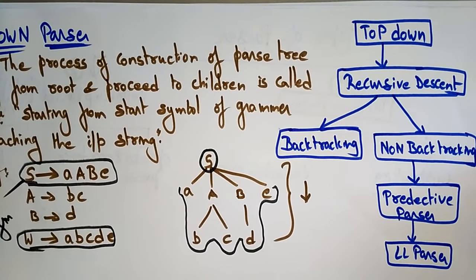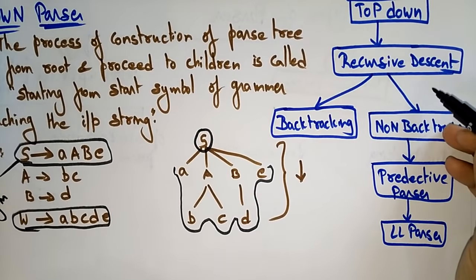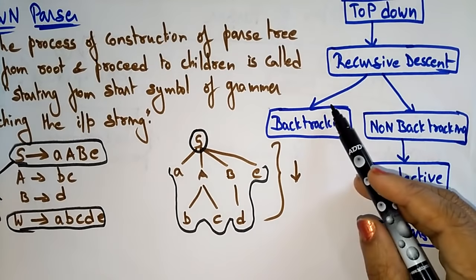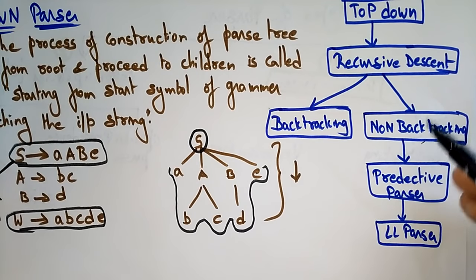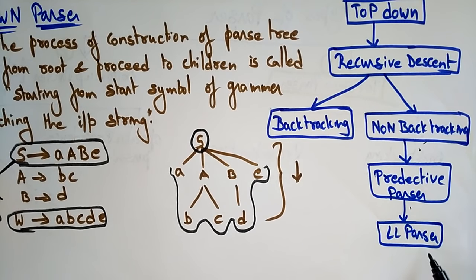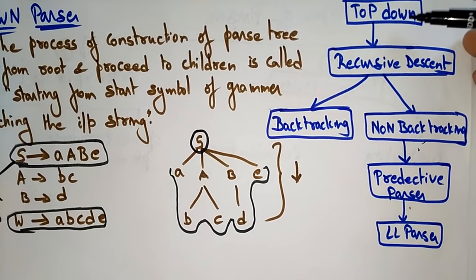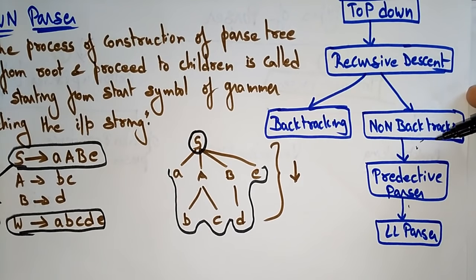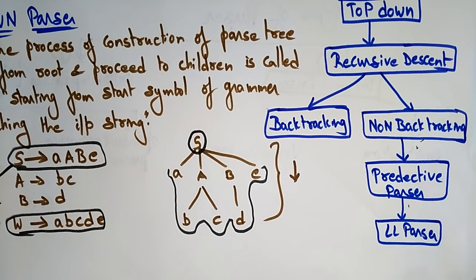The top-down parser is also called a recursive descent parser, whereas the bottom-up parser is called a shift-reduce parser. The recursive descent parser may follow backtracking or non-backtracking. The non-backtracking type comes under the predictive parser, and the predictive parser uses LL parser — so with the help of the LL parser you solve the predictive parsing problem.